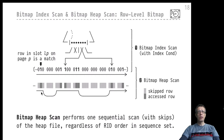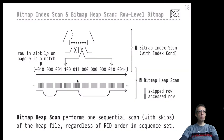This scan can even skip particular ranges of pages. Pages that do not contain any match regarding the index condition are never accessed at all — we skip them during the sequential scan. This is even more efficient than a normal sequential scan. We are guided by the bits in the bitmap to collect matching rows. The bitmap tells us which pages are relevant and records the exact row position on those pages, allowing us to directly collect the matching rows.